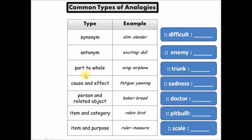Another type of analogy is part to whole. For example, wing is to airplane. What is the relationship? Wing is a part of an airplane. So to complete this analogy, wing is to airplane as trunk. Trunk is a part of a tree. The whole is the tree and the trunk is a part of the tree. That is how you need to be asking yourselves, what is the relationship between the two words?